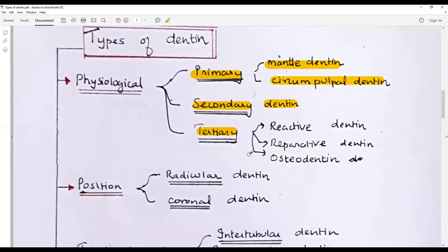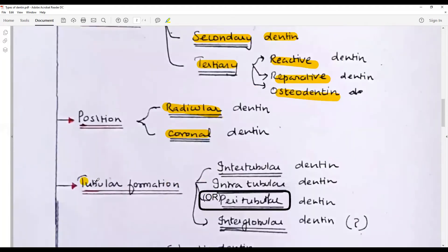Next is your tertiary dentin in response to a stimuli, which can be reactive, reparative, or osteodentine in nature. Depending upon the position, that in crown is called coronal dentin, that in root is called radicular dentin. Depending upon the tubule formation, intertubular dentin between two tubules, dentinal tubules surrounding every tubule will be your intratubular or peritubular dentin.